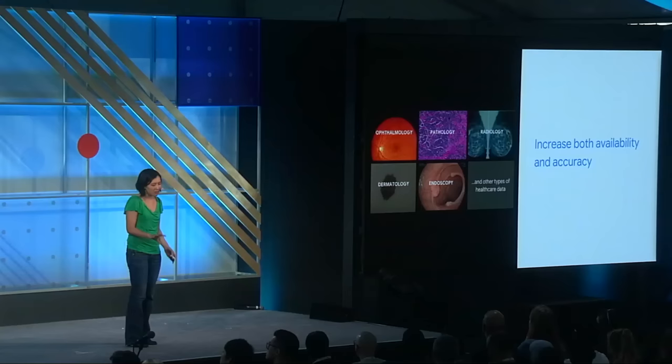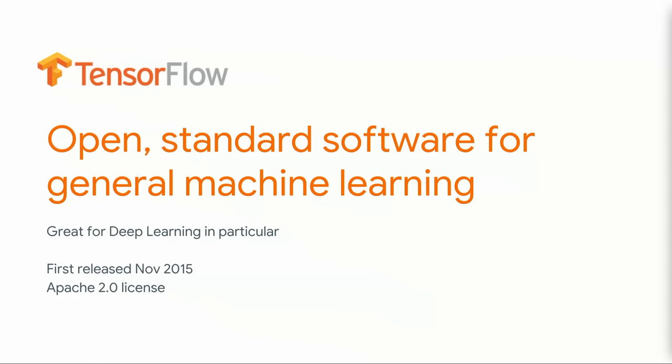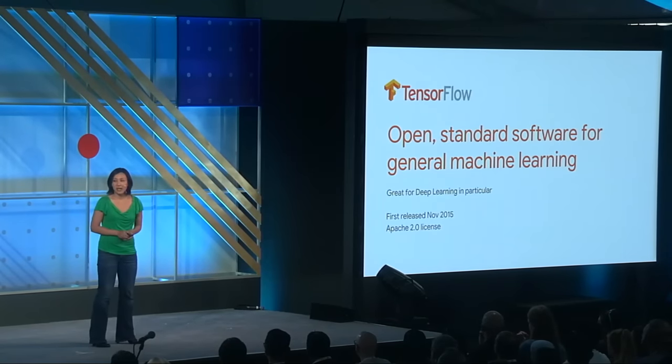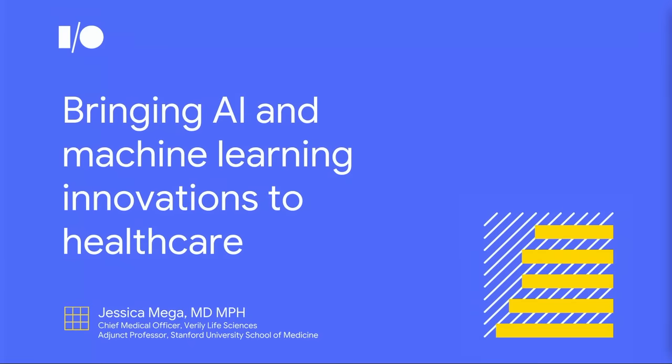I've given three examples of how deep learning can really increase both availability and accuracy in healthcare. One reason this has become more and more exciting is that TensorFlow is open sourced — this kind of open standard for general machine learning is being applied everywhere. I've given examples of work we've done at Google, but there's a lot of work being done across the community at other medical centers that is very similar. I'm really excited about what this technology can bring to the field of healthcare. And with that, I'd like to introduce Jess Mega — unlike me, she is a real doctor, and she's the chief medical officer at Verily.